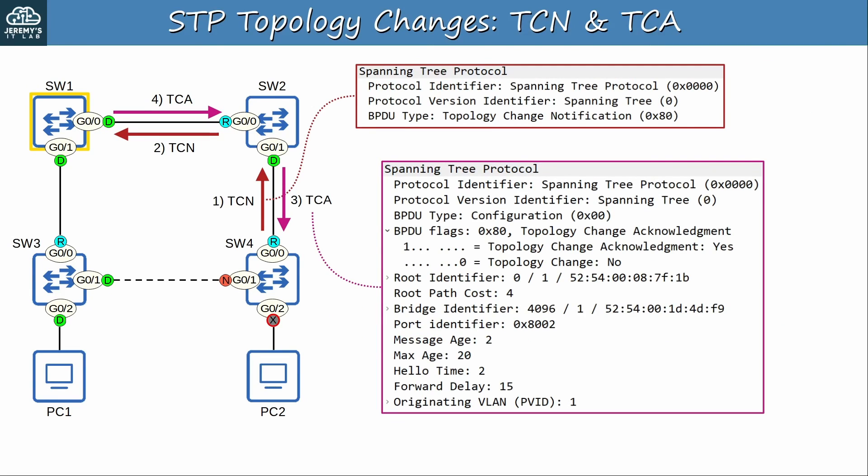Here's a look at the TCA BPDU that switch 2 sends to switch 4. Note that it is a configuration BPDU, not a TCN BPDU. There are two main BPDU types: configuration and TCN. The TCN BPDU type is only used for the notification sent to the root bridge, not for the acknowledgement of that message. Instead, the acknowledgement is a configuration BPDU with the TCA flag set, as you can see here.